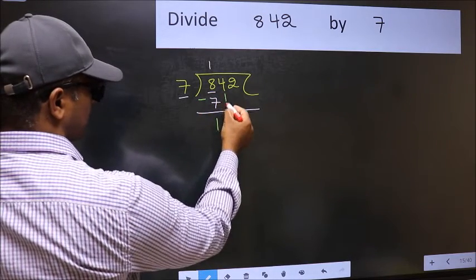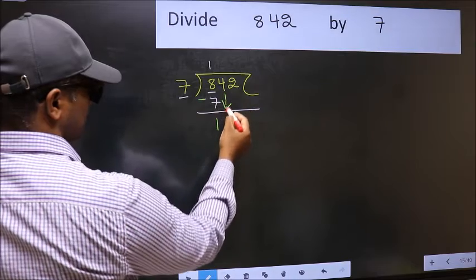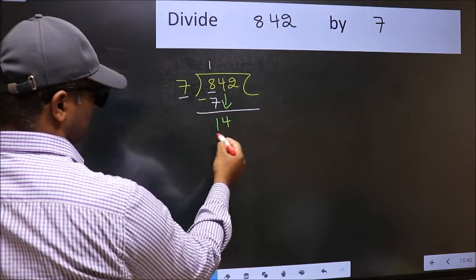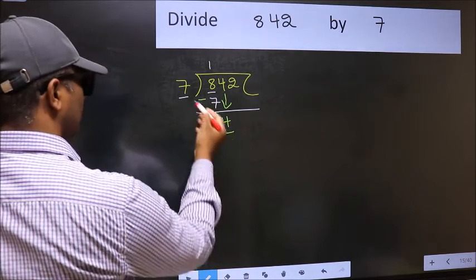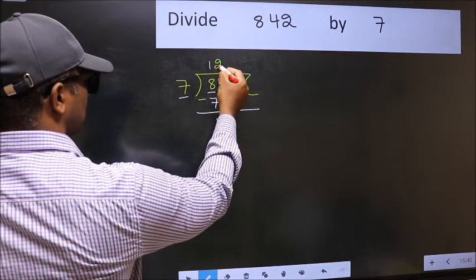After this, bring down the beside number. So, 4 down. Now, 14. When do we get 14 in 7 table? 7, 2 is 14.